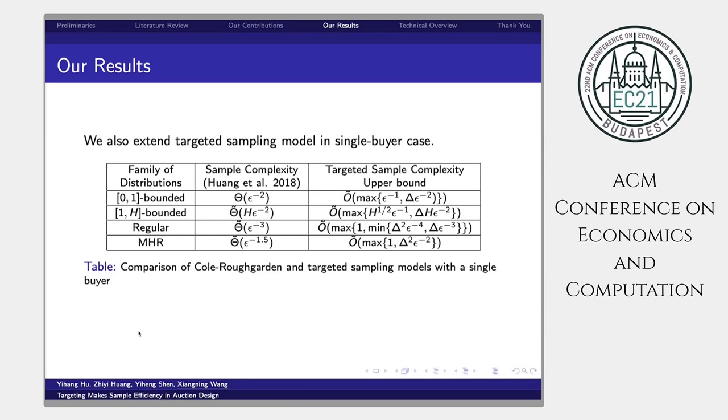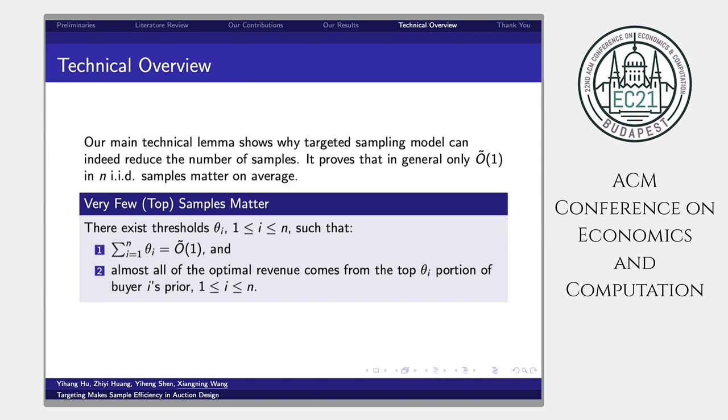Our main calculator lemma shows why targeted sampling model can indeed reduce the number of samples. It proves that, in general, only O(1) in n IID samples matter on average. The following lemma called very few top samples matter. There exists some thresholds ζi for every buyer i, such that the summation of all ζi is O(1), and almost all the optimal revenue comes from the top ζi portion of each i's prior distribution.